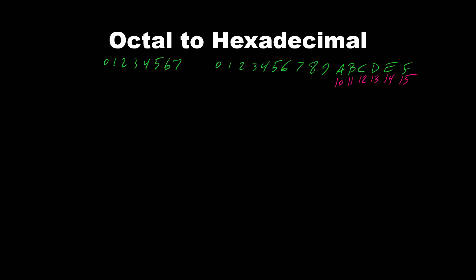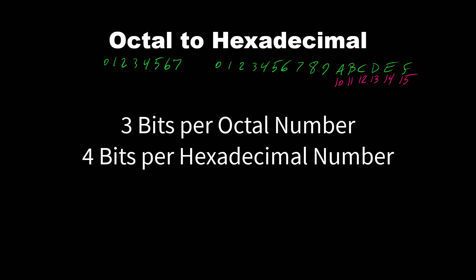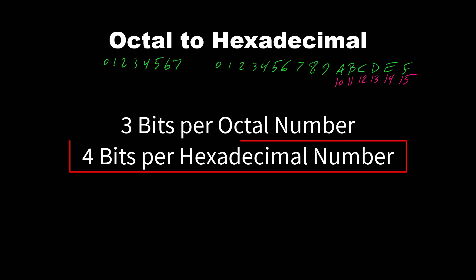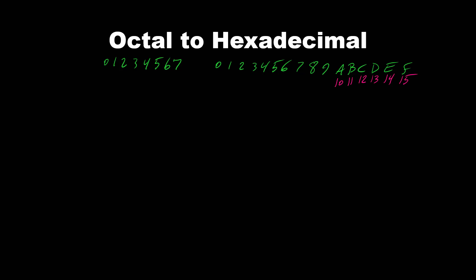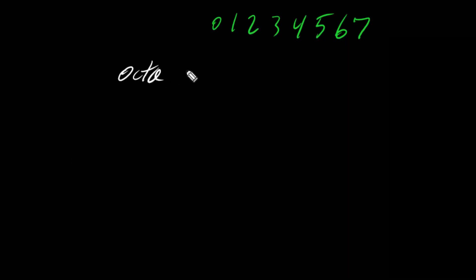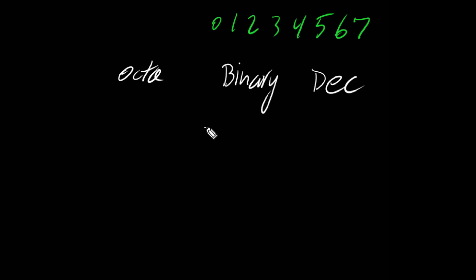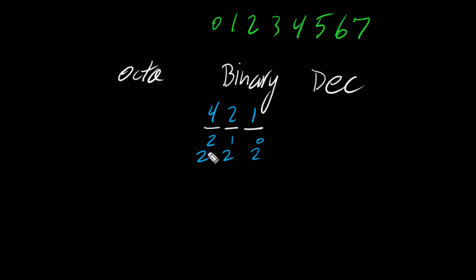An important thing to keep in mind is that we have 3 bits per octal digit and 4 bits per hexadecimal digit. For octal: the decimal values are 1, 2, 4, coming from 2 to the power of the bit position — bit position 0, 1, and 2 — since binary uses base 2. So 2^0 = 1, 2^1 = 2, 2^2 = 4.